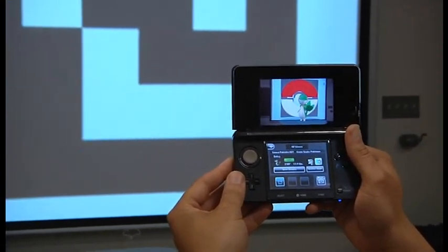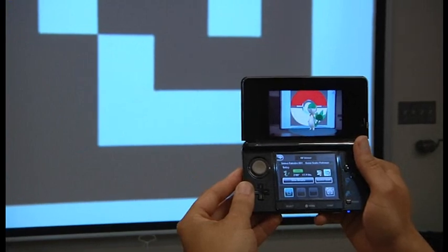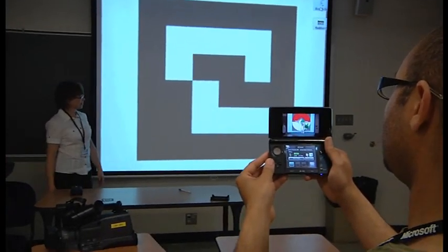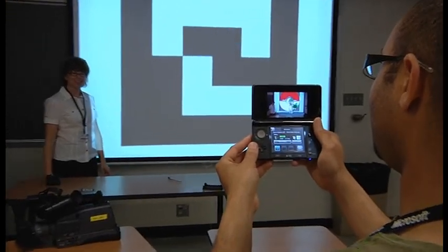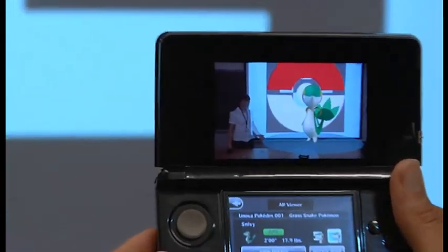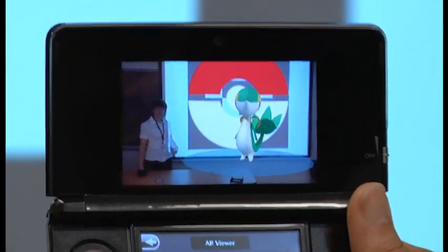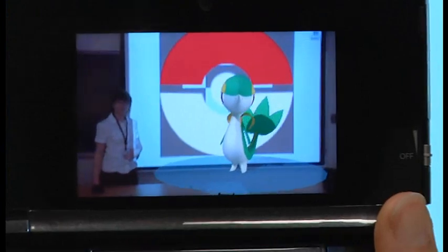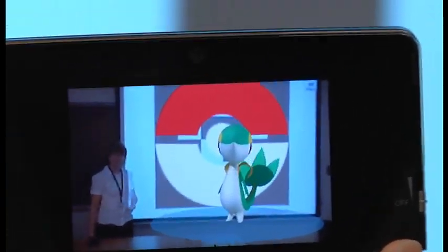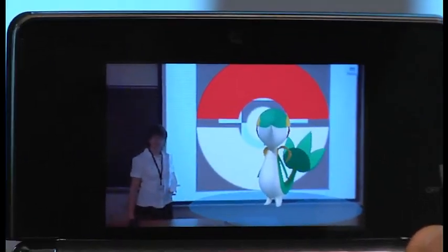Karen, can you walk over there so we can get a size comparison? Yeah, just try not to enter that black box in the front. Yeah, a little closer. Alright. Yeah. So now you see Snivy is actually bigger than Karen here is. And normally with the card, she would only be able to hold it in her hand. Right. So this thing is a whole lot bigger.